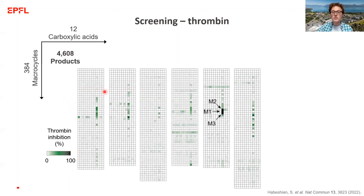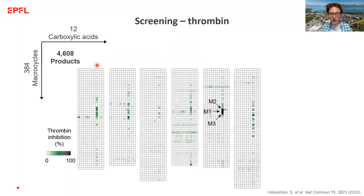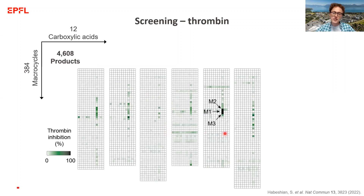I have six grids here. Looking at, for example, the left grid, we've plotted the different macrocycle scaffolds vertically in rows and the different carboxylic acids horizontally in columns. Something interesting about the results: in the fourth column from the right, you often find green wells, meaning that this particular carboxylic acid has a tendency to give products which inhibit thrombin with many different peptide scaffolds. Conversely, some horizontal lines of green mean we have a peptide scaffold with a tendency to inhibit thrombin with different carboxylic acids — so we see both patterns.